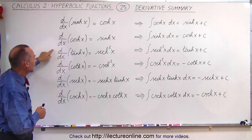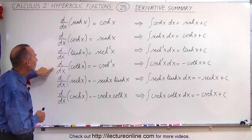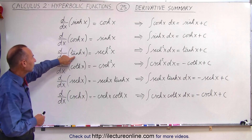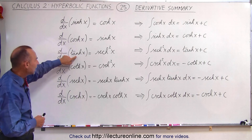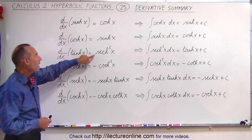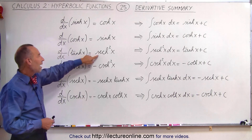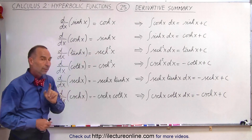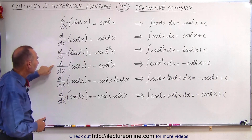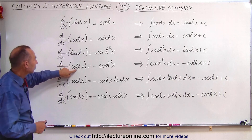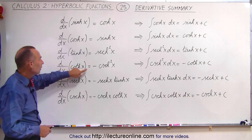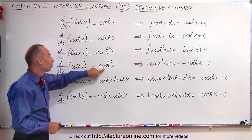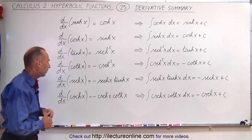When it comes to the hyperbolic tangent and cotangent: when we take the derivative of the hyperbolic tangent, we get the positive hyperbolic secant squared, but if we take the derivative of the hyperbolic cotangent, we get the negative hyperbolic cosecant squared.